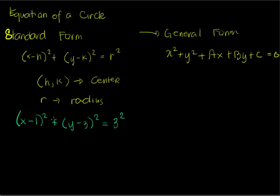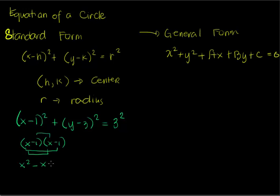To convert this to general form, we're going to expand each term. We expand x minus 1 squared as x minus 1 times x minus 1: x times x is x squared, x times negative 1 is negative x, negative 1 times x is negative x, and negative 1 times negative 1 is positive 1. This simplifies to x squared minus 2x plus 1.